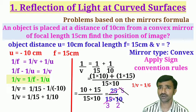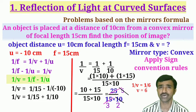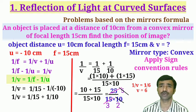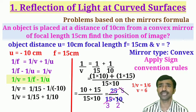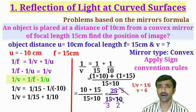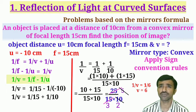Therefore v = 6 cm. Observe the sign: v = +6 centimeters. A positive value indicates the image is behind the mirror, meaning it is a virtual image. So the position of the image is 6 centimeters behind the mirror. This also confirms what we learned from ray diagrams — a convex mirror always forms a virtual image behind it.